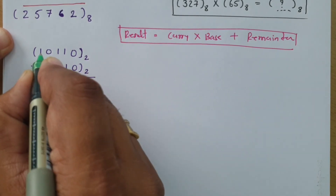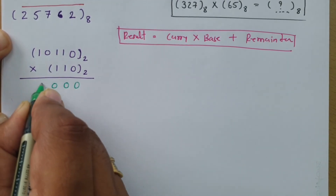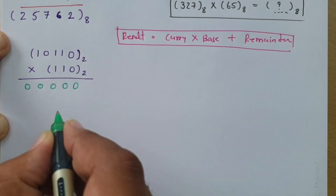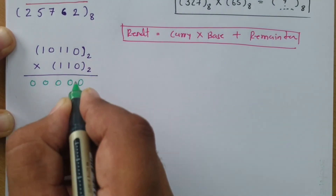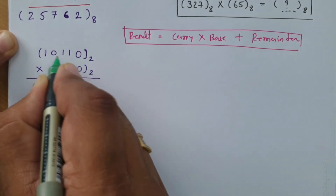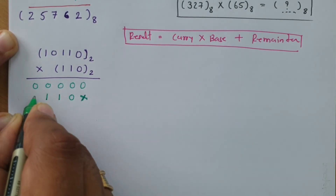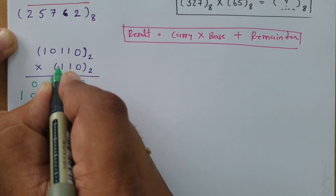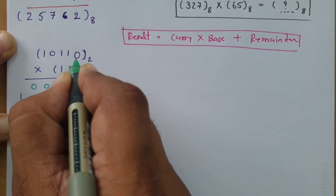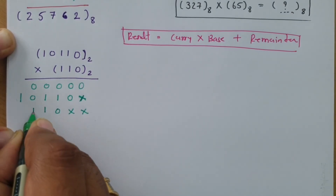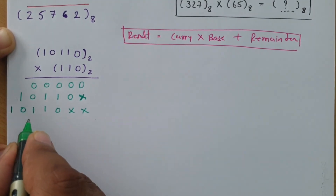Initially, the rightmost bit 0 of 110 is multiplied with all digits, giving five zeros. Then the next bit 1 multiplies with 10110 — with one position of padding — giving 01101. Then the leftmost bit 1 multiplies with 10110 — with two positions of padding — giving 01101 shifted left by two positions. This is how we form the partial products for binary multiplication.